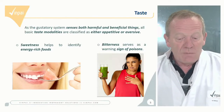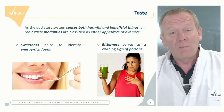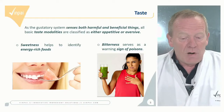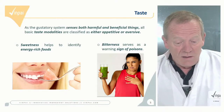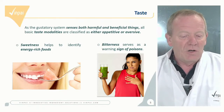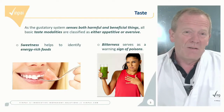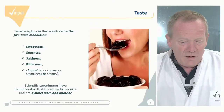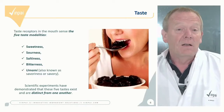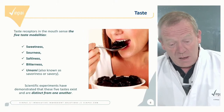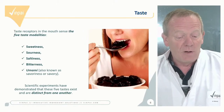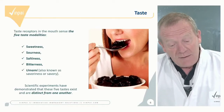Originally, taste existed to sense both harmful and beneficial things we put in the mouth. That is why taste modalities are classified as either appetitive or aversive. Sweetness, for example, helps identify energy-rich foods, while bitterness serves as a warning of danger because it is a sign of poisons. Today we officially recognize five different tastes: sweetness, sourness, saltiness, bitterness, and umami, also known as savoriness. Scientific experiments have demonstrated that these five tastes are distinct from one another.